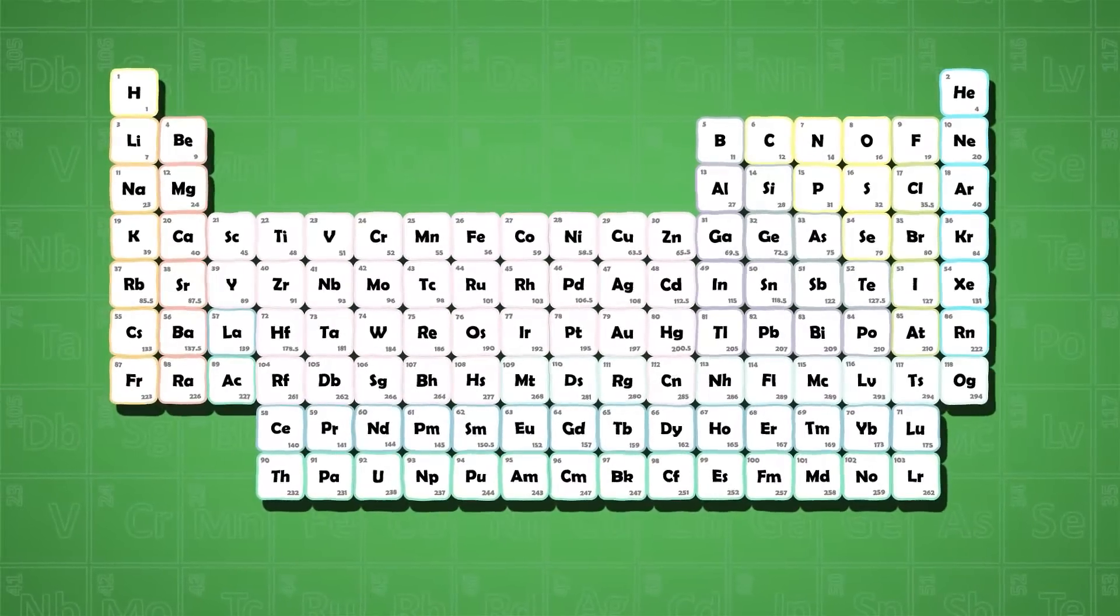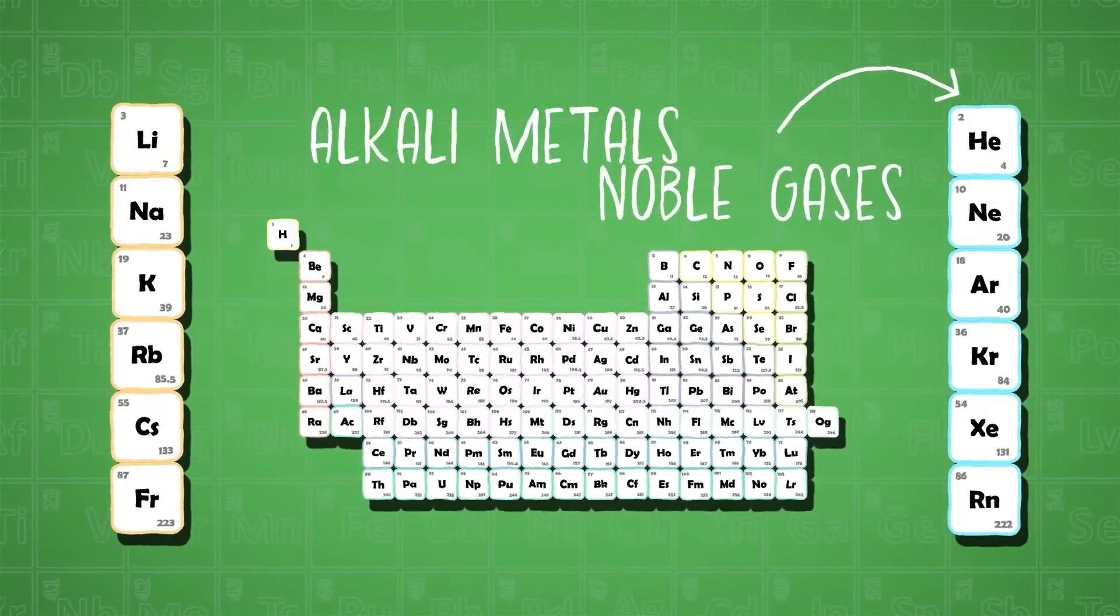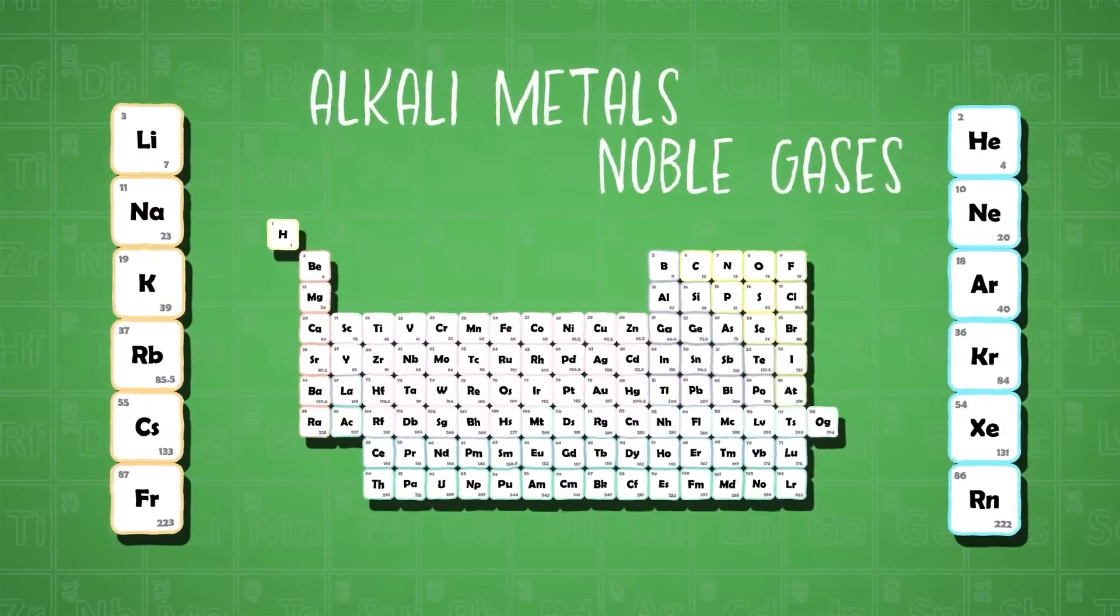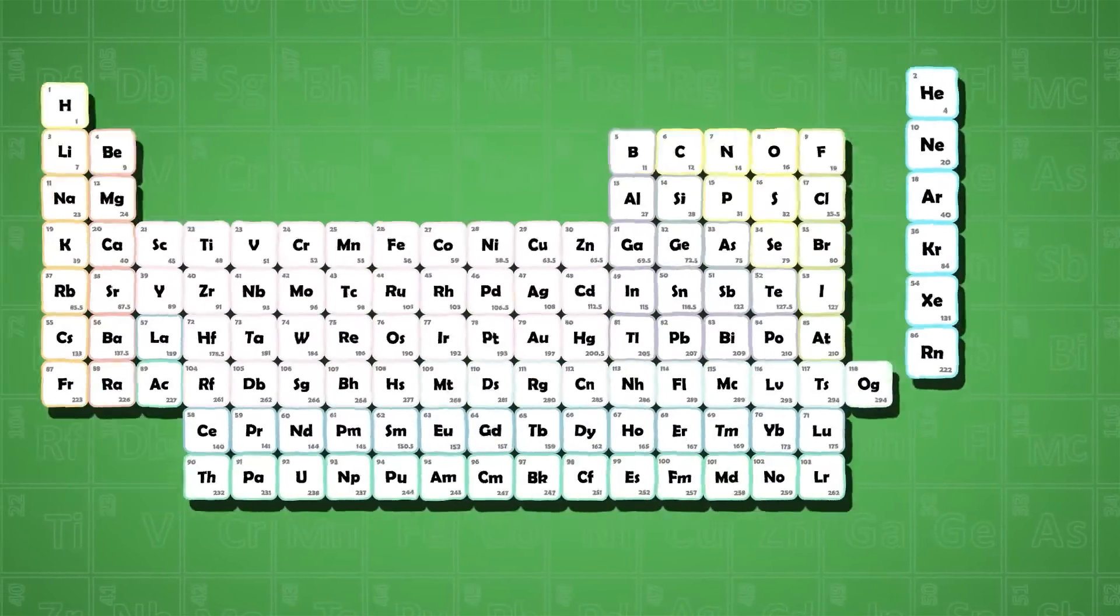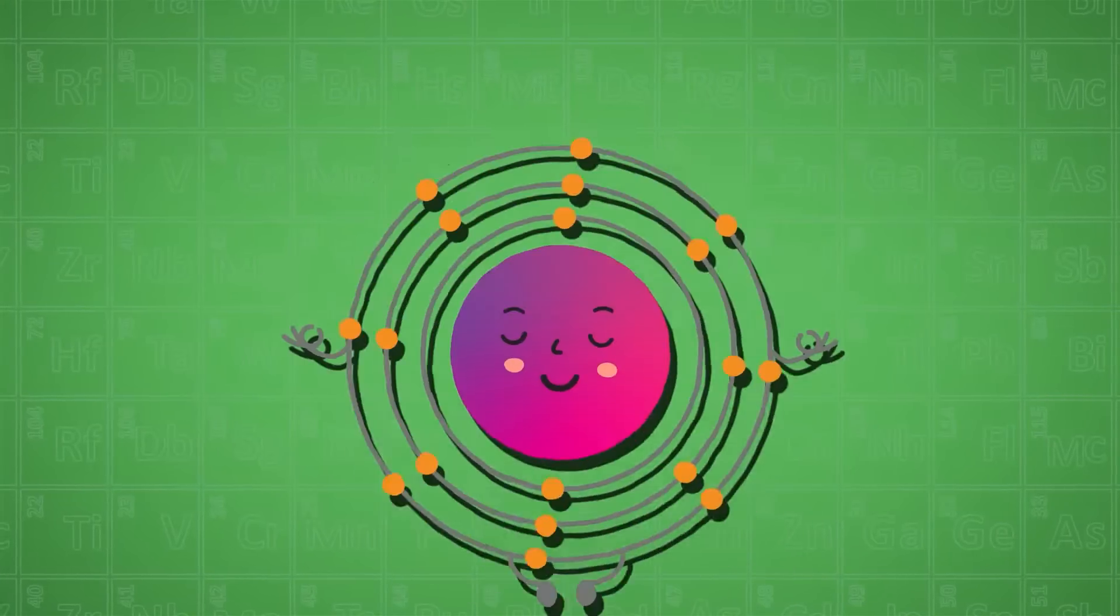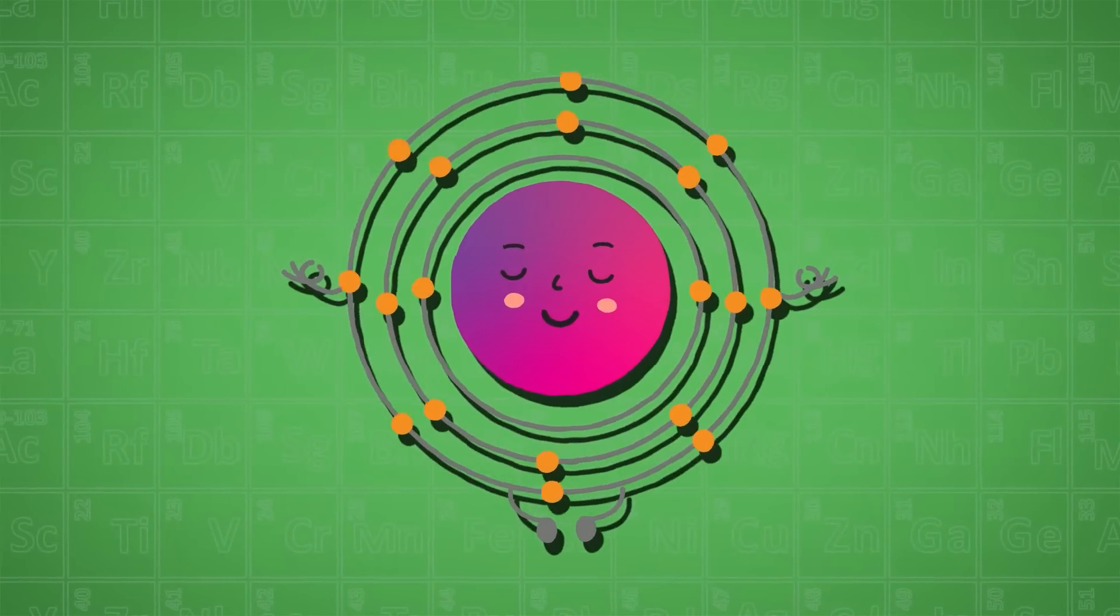Two examples of groups in the periodic table are noble gases or alkali metals. Noble gases are found in the last column of the periodic table. These elements have a full outer shell of electrons which makes them very stable.